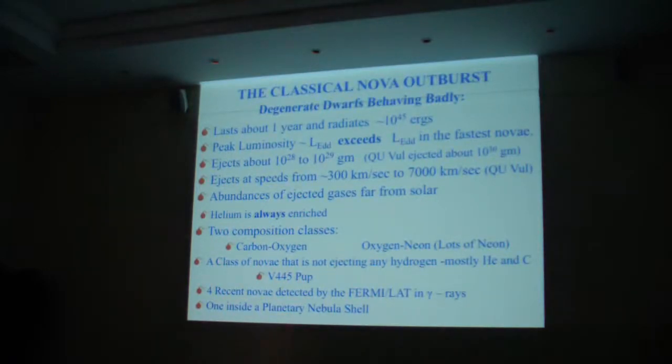So, classical nova outburst or degenerate dwarf behaving badly, lasts about a year, radiates about 10^45 to 10^46 ergs. Peak luminosity exceeds the Eddington luminosity for the most violent of the nova outbursts. Ejects about 10^-5 to 10^-4 solar masses at speeds from 300 to, in fact, more than 7,000 kilometers per second. Abundances of the ejected gases, we've been measuring them for more than 20 to 30 years, and they're far from solar. Helium is always enriched.